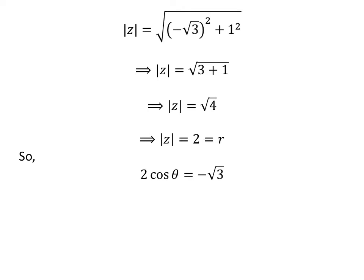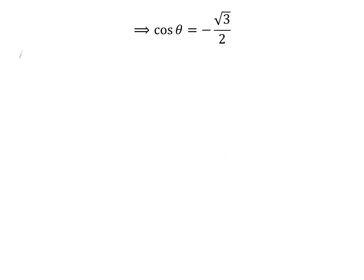As we know, r times cosine of theta is equal to minus square root of 3. Dividing the above equation by 2 gives us cosine of theta is equal to minus square root of 3 upon 2. Similarly, we get sine of theta is equal to half.